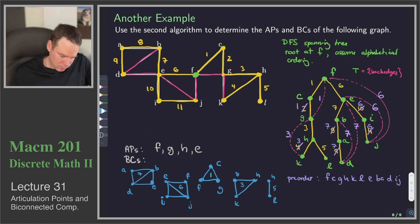And so there we go. We've got our biconnected components. There's 1, 2, 3, 4, 5 biconnected components.